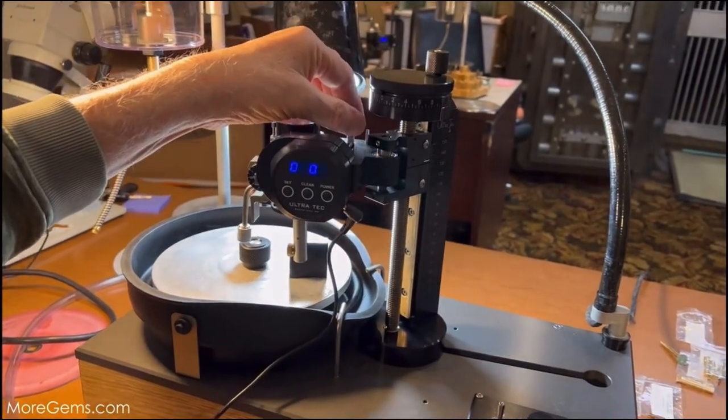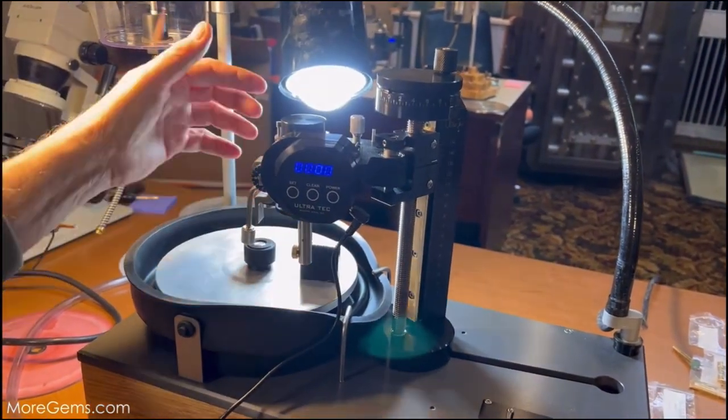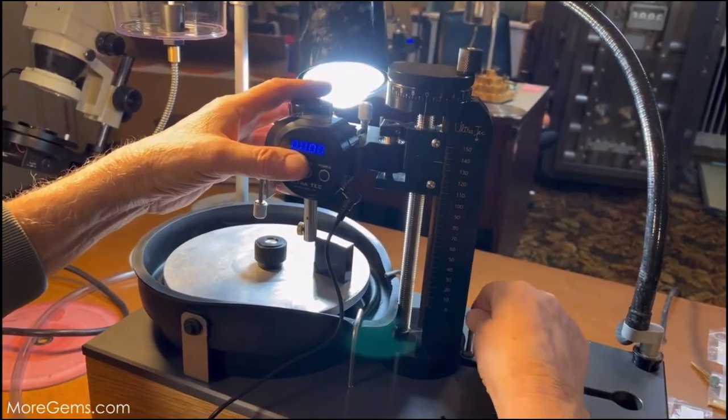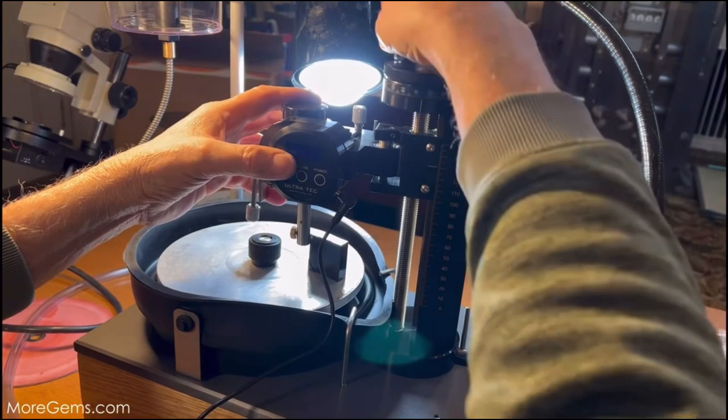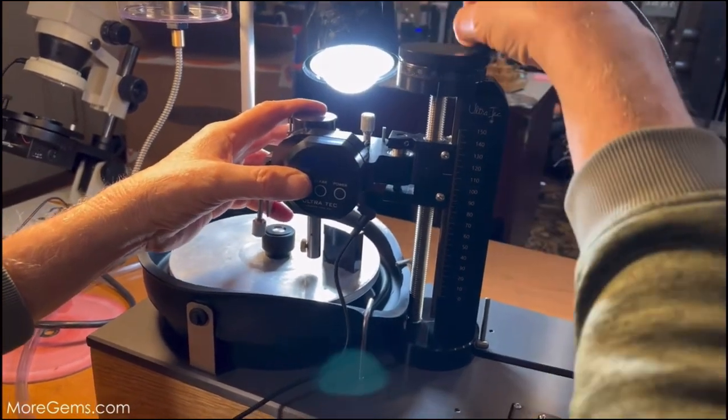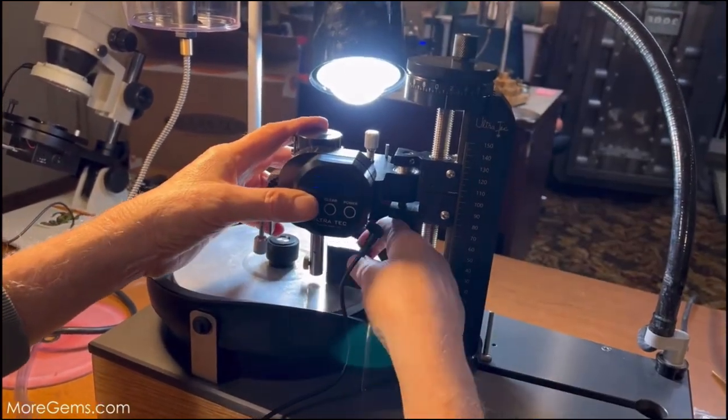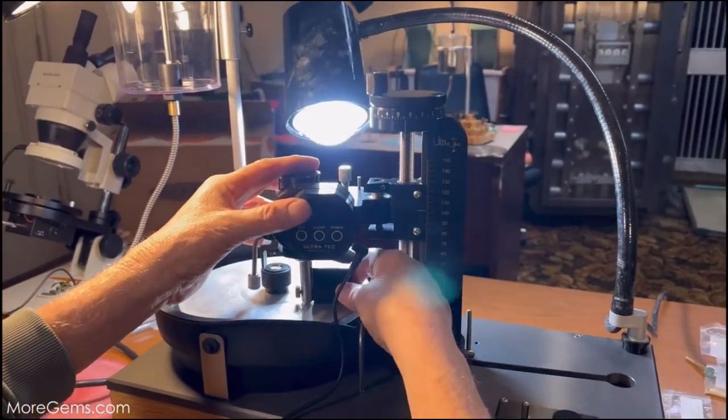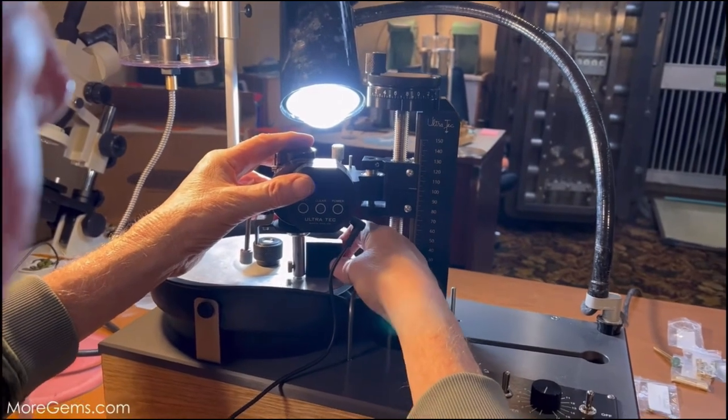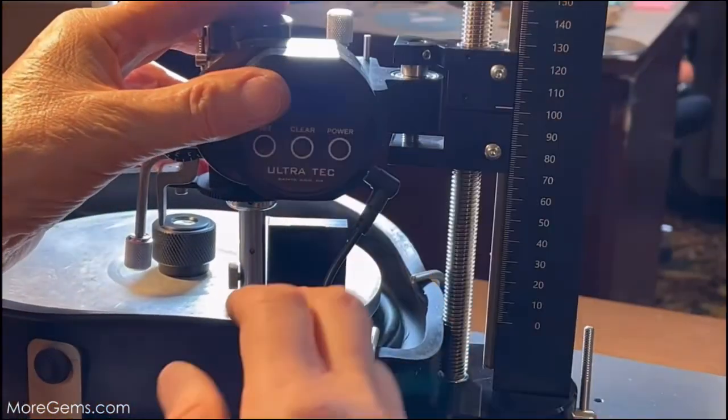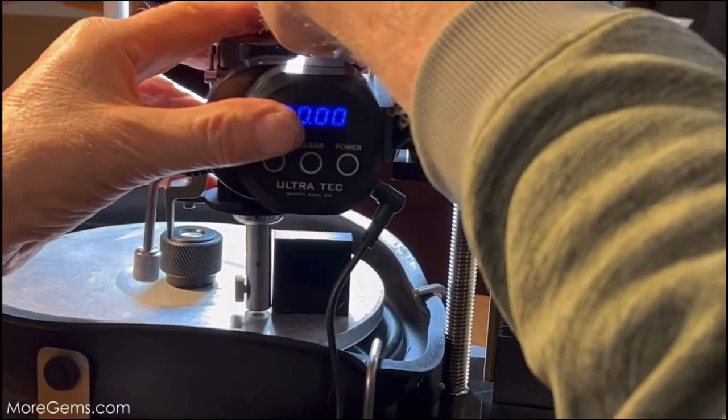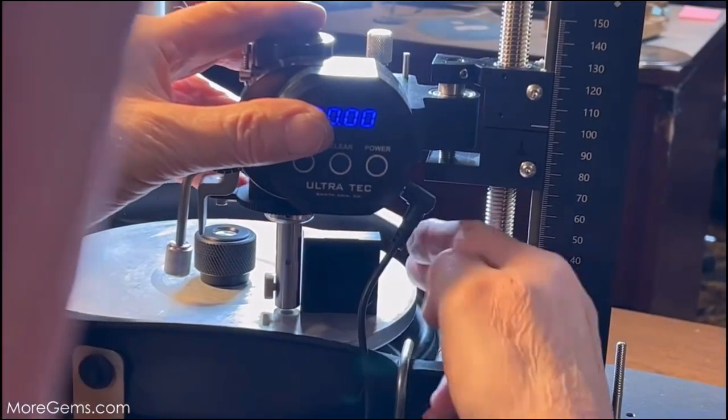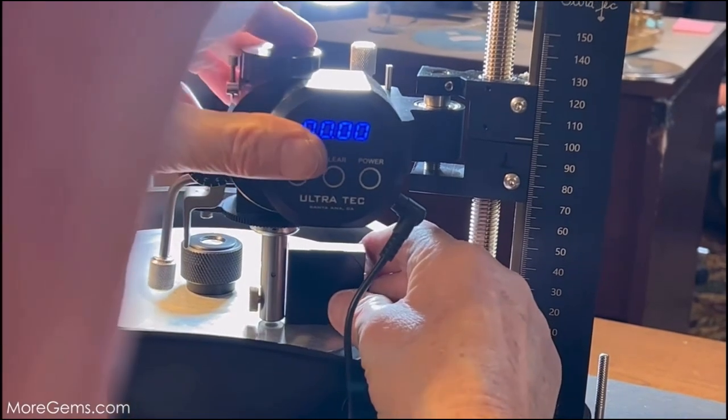Move this all the way in, crank this down again, and put the block next to it. We're going to use the fine adjustment to set this until it goes dark.